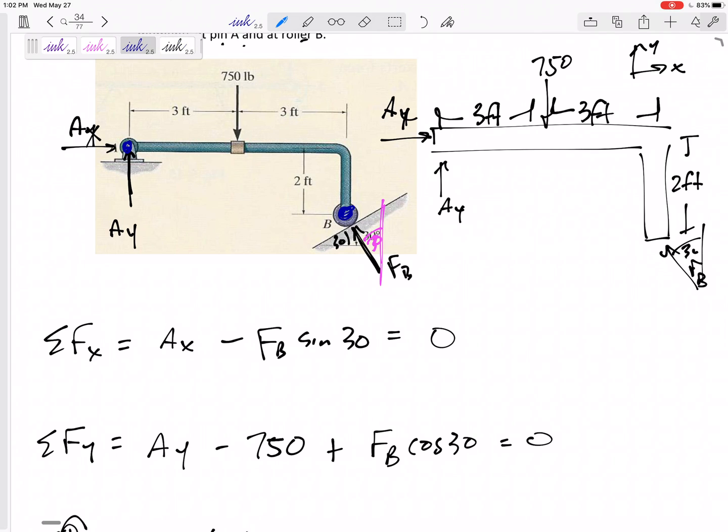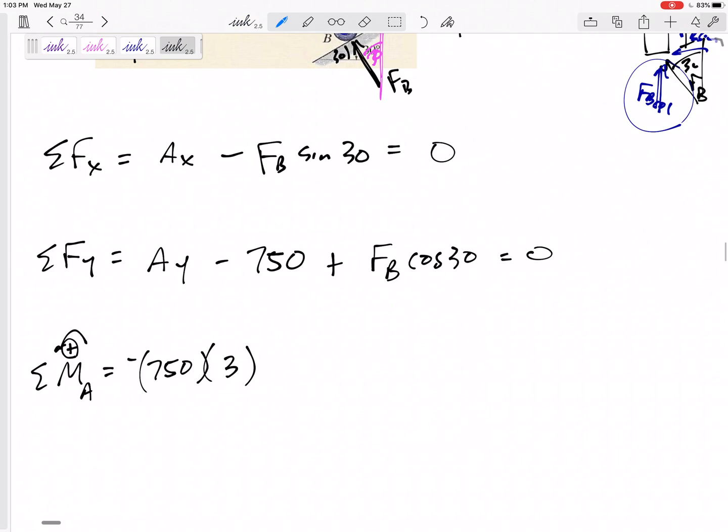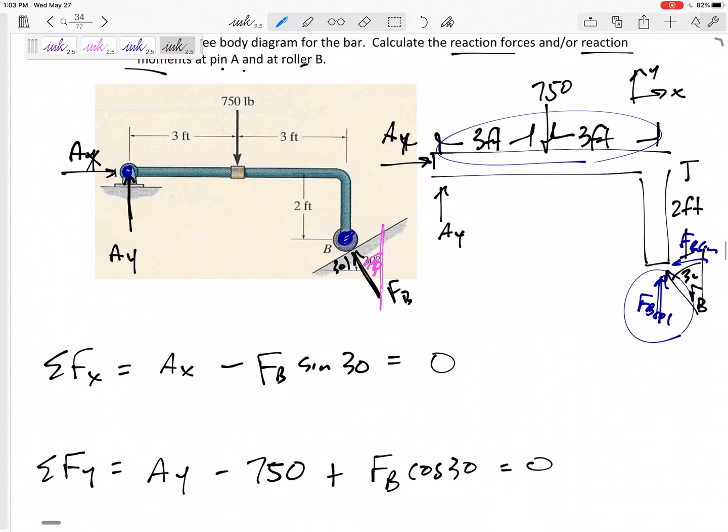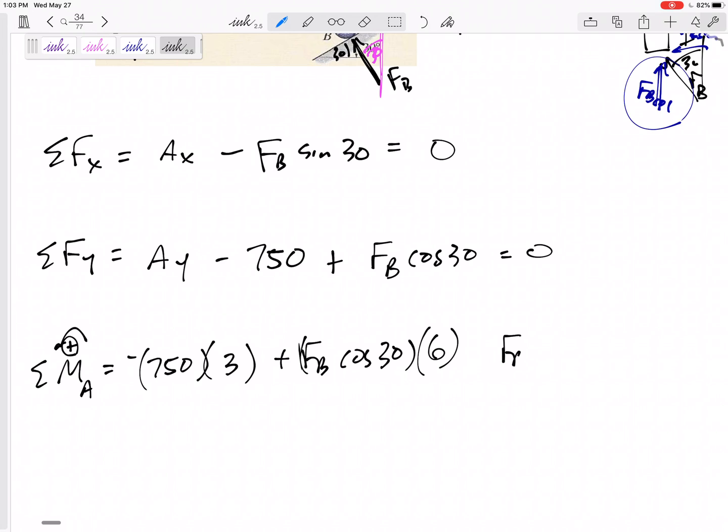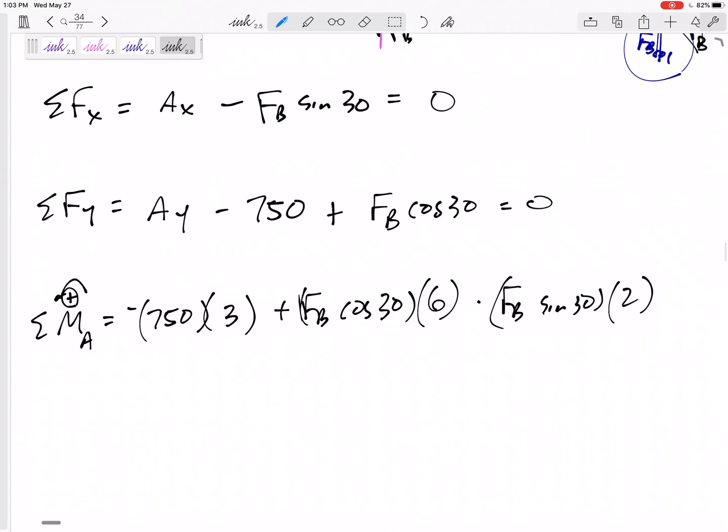Then let me go back to my free body diagram. How about this one, Fb? That would be the cosine 30, this would be Fb sine, Fb cosine. Fb cosine 30 times six feet away creates a positive counterclockwise moment. The Fb sine 30 is down here, it would create a negative moment. Its moment arm is two feet, two feet away creating a negative moment.